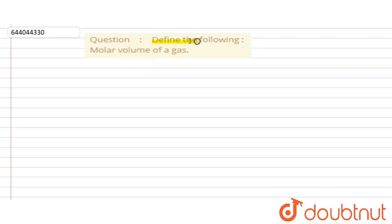Here the question is define the following: molar volume of a gas. Molar volume of a gas - its definition says that volume occupied by one mole of any gas.